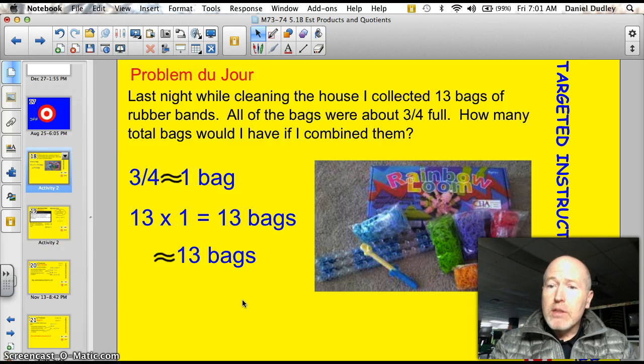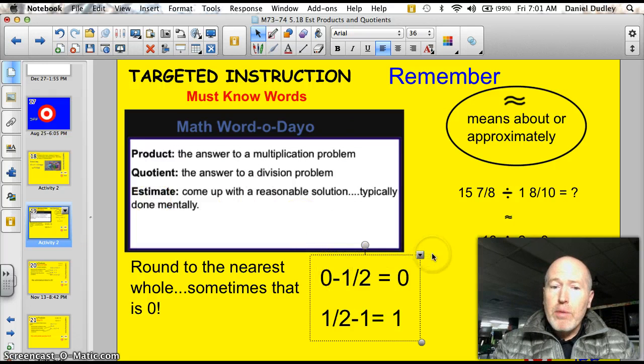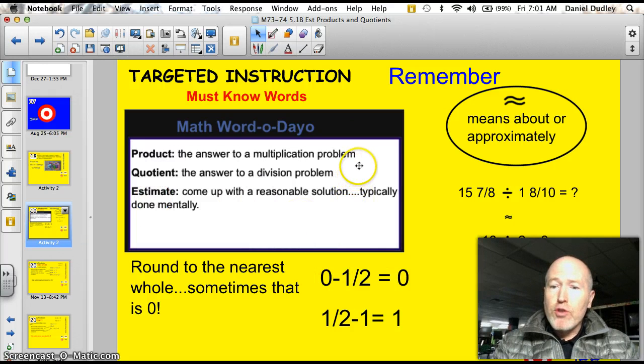Estimating products, quotients. A little review of vocabulary. A product then is the answer to a multiplication problem. The quotient, the answer to a division problem. And then estimate, let's come up with a reasonable solution. We usually do this mentally. You don't need to grab a calculator to do this. A couple other things. Remember that this funny little sign means approximately.